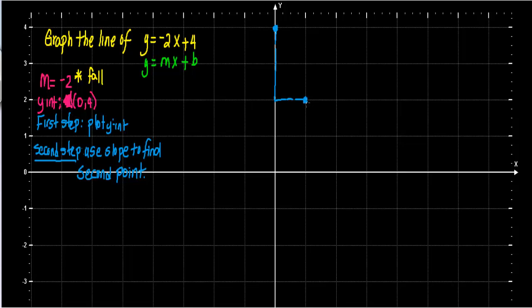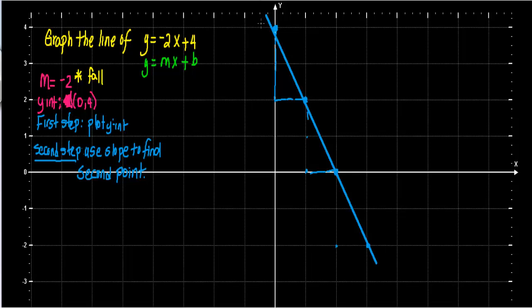You can keep going — fall 2 more, run 1, and there's a third point. Notice all these points are part of the same line. Draw the line with arrows at both ends. Notice how this slope is negative — when we walk from left to right and the line falls or decreases, that means its slope is negative.